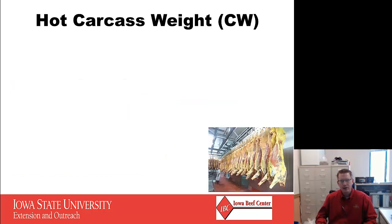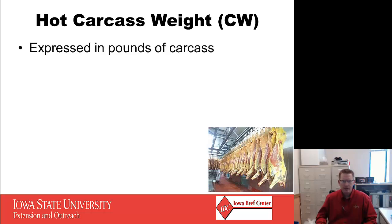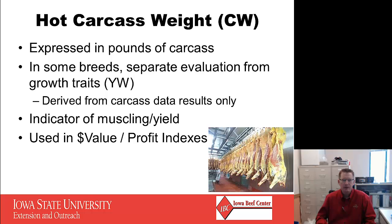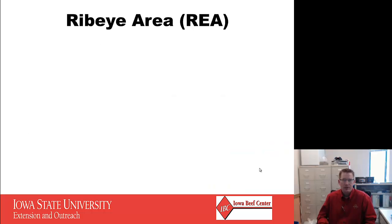The first trait is hot carcass weight, also abbreviated as CW or HCW. It is expressed in pounds of carcass, not necessarily pounds of live weight when they head to harvest. In some breeds, it is a separate evaluation from the growth traits like yearling weight, so it is derived from the carcass data results only — individual performance data such as yearling weights aren't necessarily used to help determine this carcass trait. It is an indicator of both muscling and yield, and it is used in dollar values and profit indexes as a driver for profitability in the feedlot.